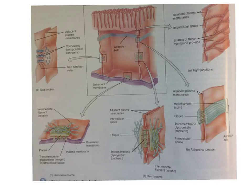Hello, anatomy students. In this podcast, I'm going to review the major types of cell junctions. As we've learned, tissues are groups of specialized cells, and they are connected to each other through various methods of attachment called cell junctions.